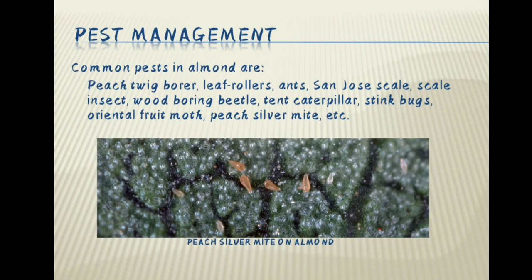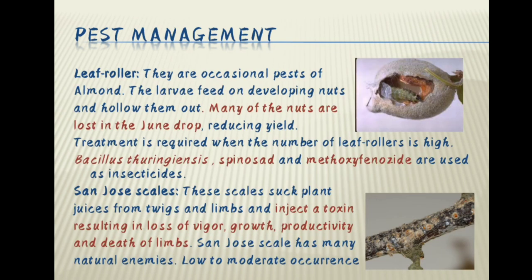Pest management. Common pests in almond are peach twig borer, leaf rollers, ants, San Jose scale, scale insect, wood boring beetle, tent caterpillar, sting bugs, oriental fruit moth, peach silver mite, etc. Leaf rollers are occasional pests of almond. The larvae feed on developing nuts and hollow them out. Many of the nuts are lost in June drop, reducing yield. Treatment is required when the number of leaf rollers is high. Bacillus thuringiensis, spinosad and methoxyfenozide are used as insecticides.